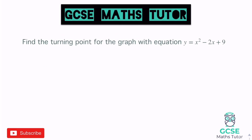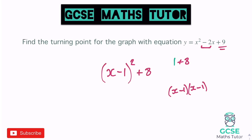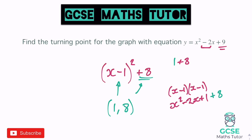One more to look at — different wording again. It just says find the turning point for the graph with this equation. That's the process we're going to use. The x coefficient is negative two, so halving that gives x minus one, squared. Expanding that double bracket gives positive one, and we don't want positive one, we want plus nine, so we add eight. You can expand (x − 1)(x − 1) to get x² − 2x + 1 and think: what do I add to one to get nine? That's plus eight. So the turning point is (1, 8).